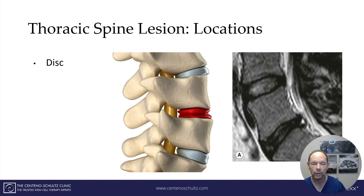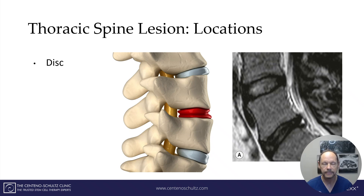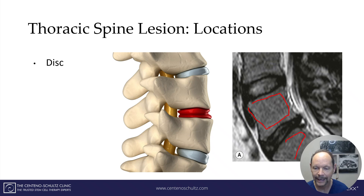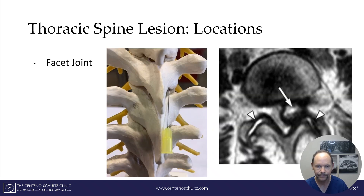The next location where a lesion can occur is the disc. The disc is that shock absorber between the bony building blocks — it's a really important structure that absorbs the forces of daily living. There can be a lesion in this, and I've depicted that here. This is the side view, and you can see this white abnormality between the vertebrae. That could be reported as a lesion.